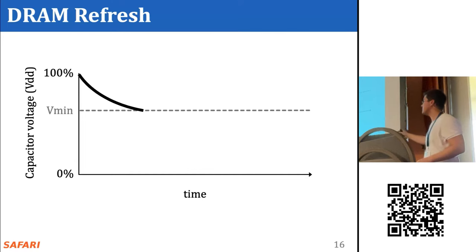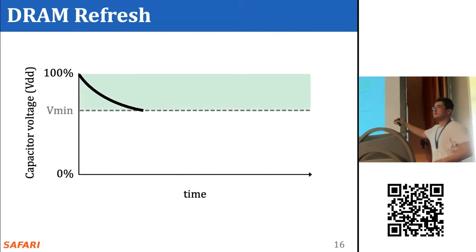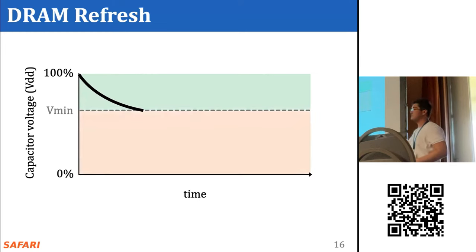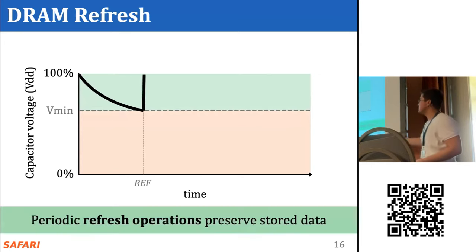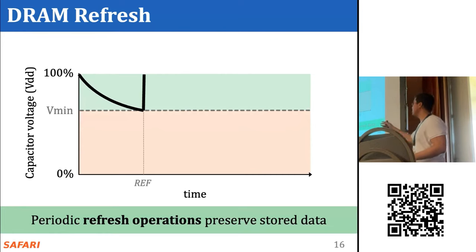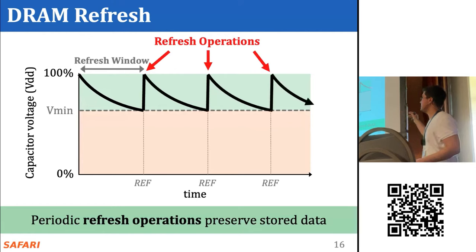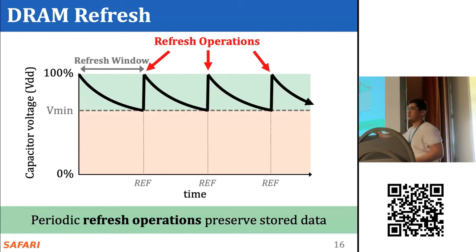The capacitor voltage on the y-axis degrades in exponential decay over time on the x-axis. There is a threshold V_min below which we can no longer guarantee the cell stores correct data. As long as we are above this line, we consider it a retention success; below it is a retention failure. To prevent retention failures, we periodically restore charge using refresh operations. We call the delay between consecutive refreshes the refresh window.